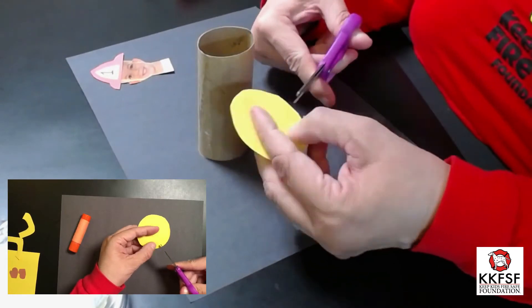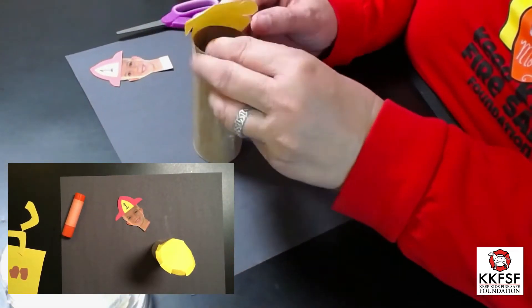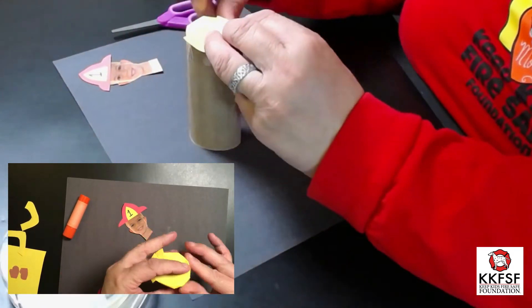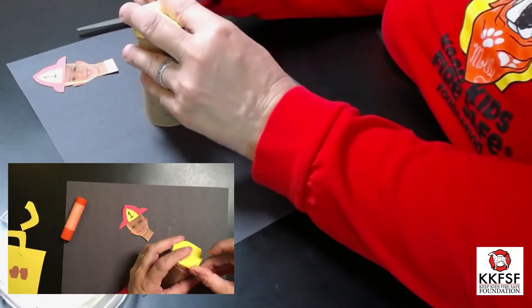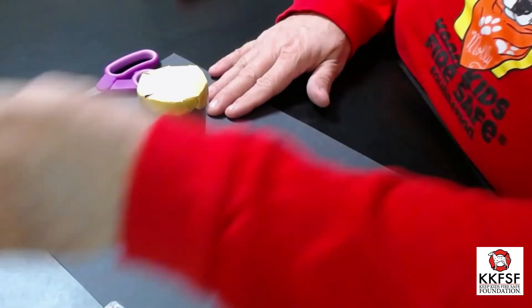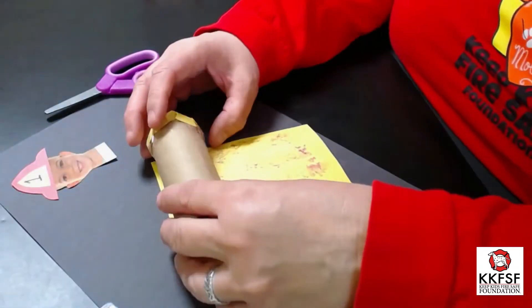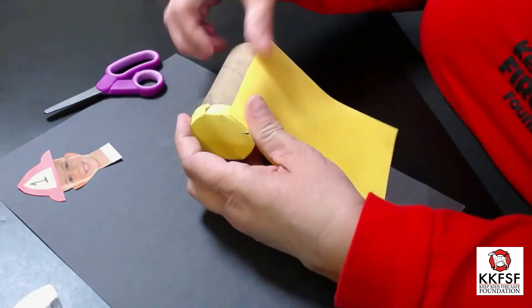Next, take your toilet paper roll and your round circle and apply the construction paper to the top of the toilet paper roll. Take your long piece of construction paper, apply glue, and then roll around the toilet paper roll, finally applying tape.